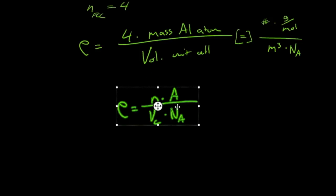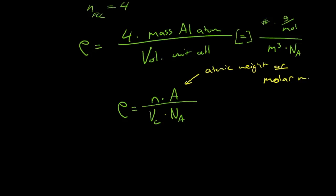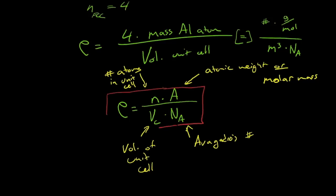And let me just label these for you. So that's the atomic weight, as many people call it, or it's also commonly known as the molar mass. This is the Avogadro's number. That's the volume of the unit cell. And that's the number of atoms in the unit cell. And that's an equation that's quite useful. So let's give that a red box, just for good measures.